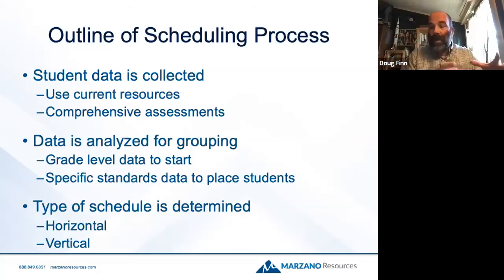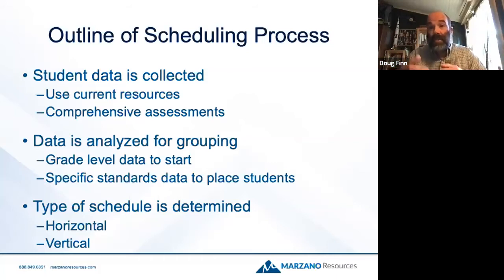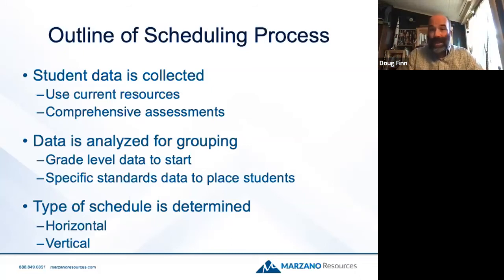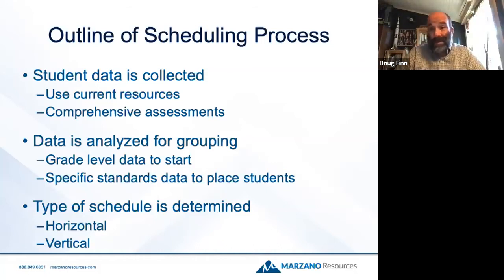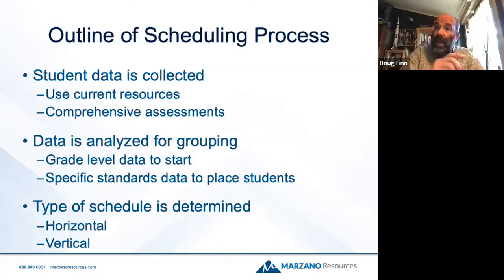I always look at data specificity like a ballpark, section, row, and seat. People say they ballparked it — but that's still a pretty big area. We want to get to section, row, and seat in the specificity of what students know and don't know. Then once the data is there, we have to analyze it. We look at grade-level data and specific standard data — because you get overwhelmed with the process when you have 500 kids. In the past, we just organized by age. I get why we did it, but age is not the best variable to use.